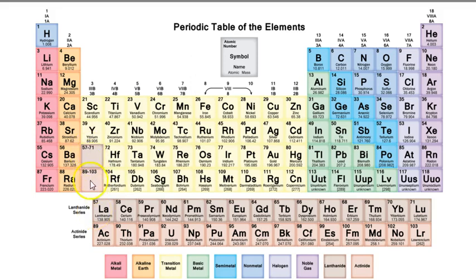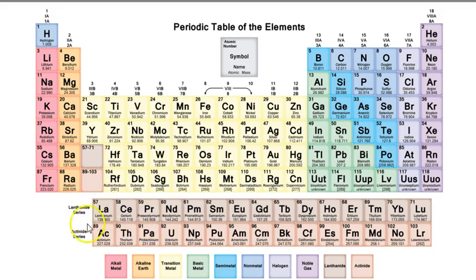Right here where there are these two empty boxes, that is where these two rows are going to go in. You may remember that I showed you a different periodic table showing how these should go right in here — it's very stretched out — but we put them down below. We're going to talk about these two groups together called the inner transition metals.